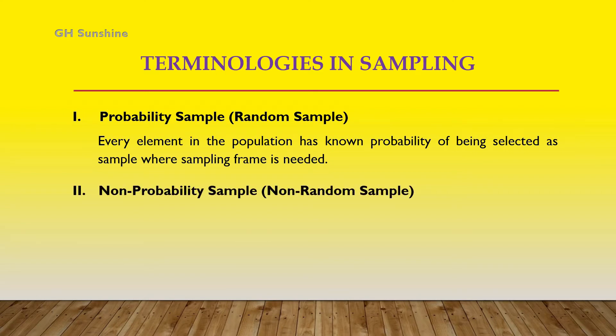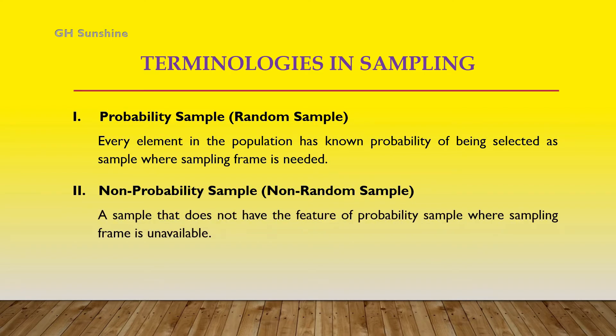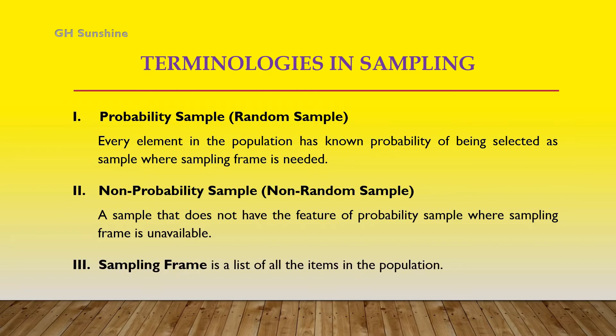Number two, non-probability sample, which is known as non-random sample. A sample does not have the feature of probability sample, and the sampling frame is unavailable. The sampling frame is a list of all the items in the population of interest.